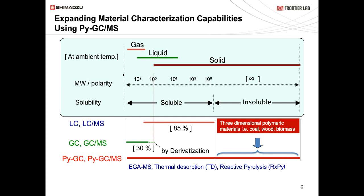Now let's discuss how you can extend material characterization using pyrolysis GCMS. At room temperature, a substance can be gas, liquid, or solid depending on molecular weight. Some solid samples are soluble in solvent, so you could use analytical techniques such as LC, LCMS, GC, or GCMS. However, there is a range of solid samples that are insoluble in any solvent. That's where PyGC or PyGCMS comes in and expands the capabilities of your GCMS—not only can you analyze gas and liquid, but you are also expanding the range of solid samples you can analyze. There is no need for solvent extraction or sample pretreatment before the analysis; you could just inject a solid sample as it is into the furnace.